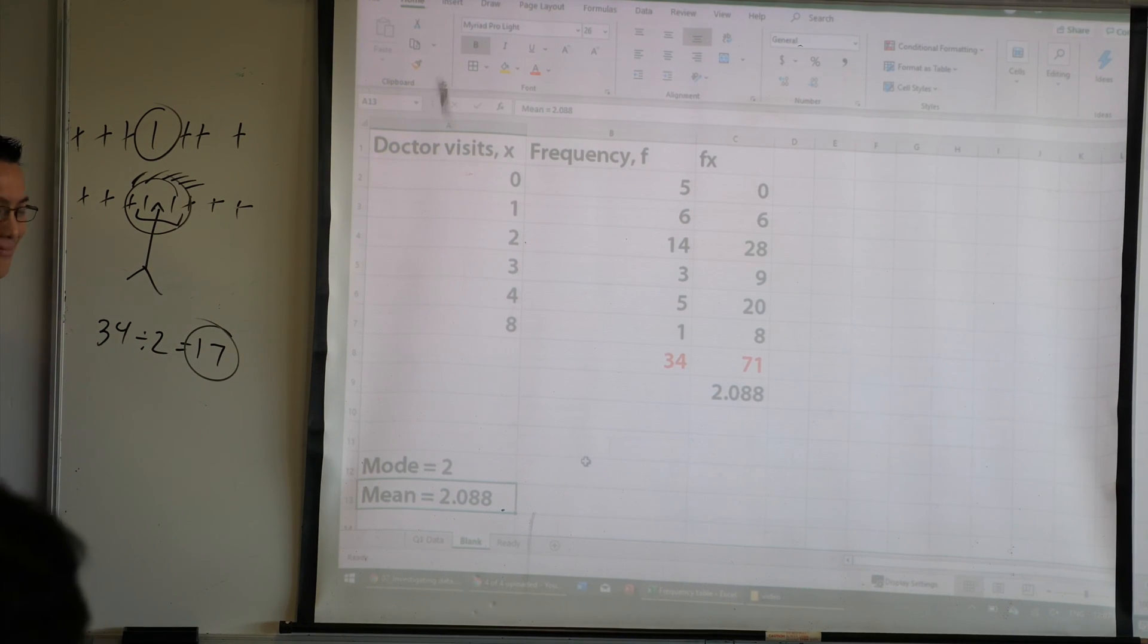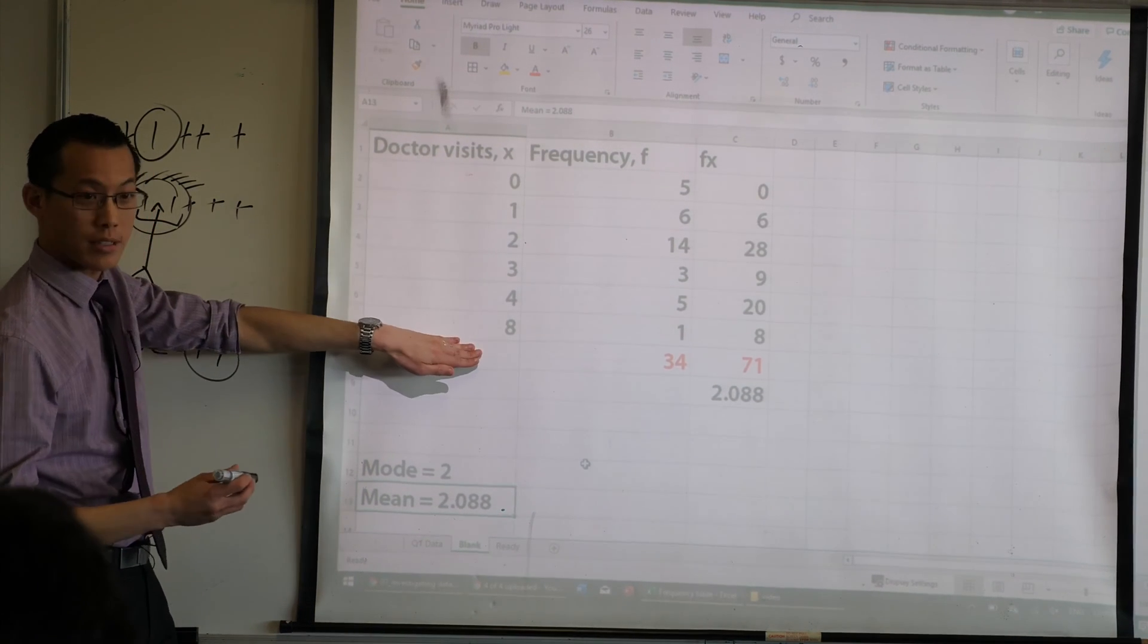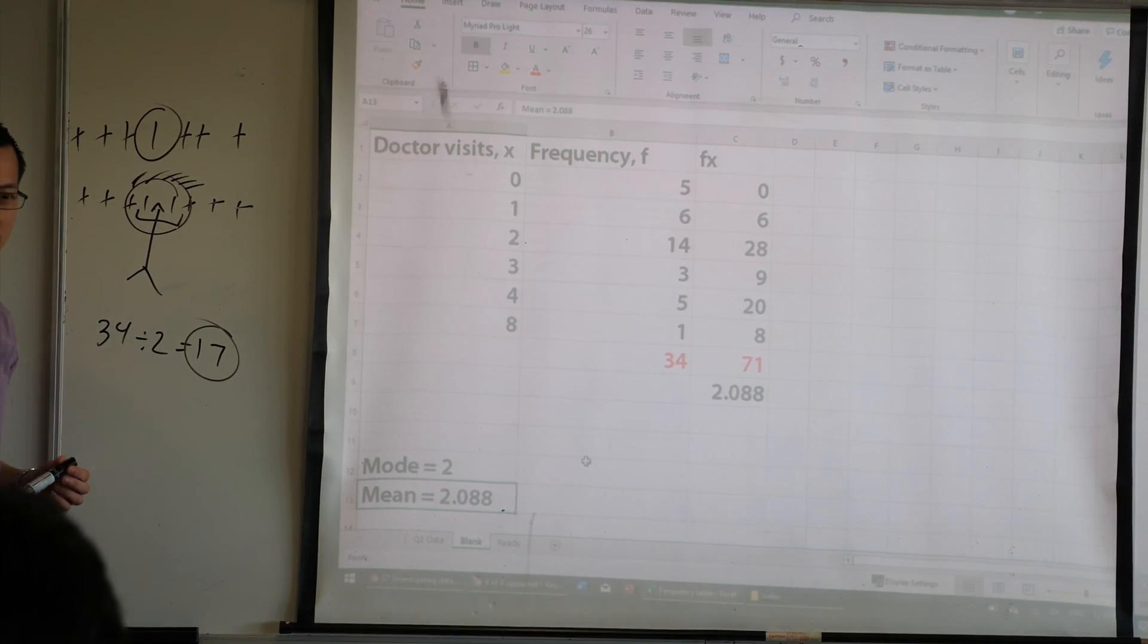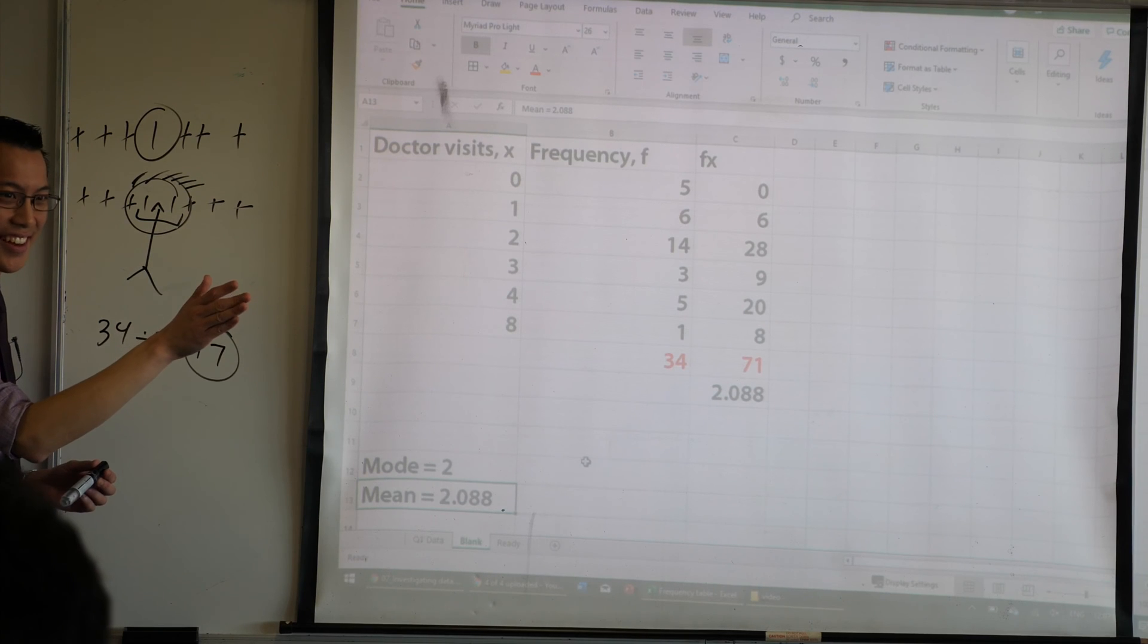first you have to make all those numbers in each, like, from lowest to biggest. From lowest to biggest. Yeah. And then you count 17 numbers in. And then that's the... Okay.